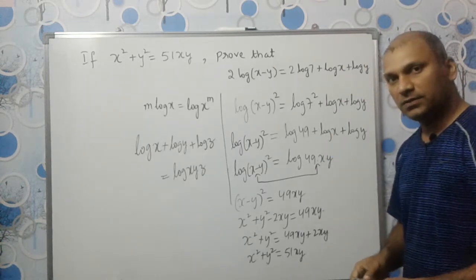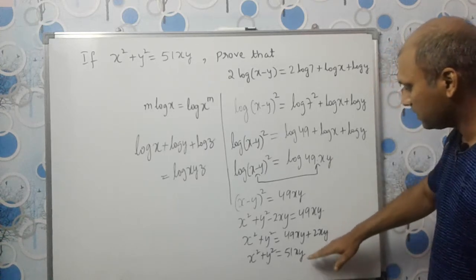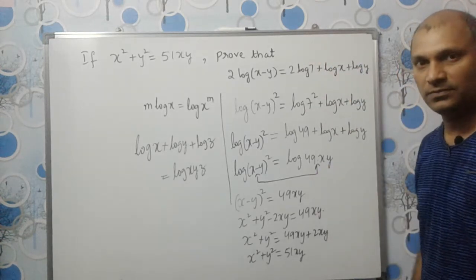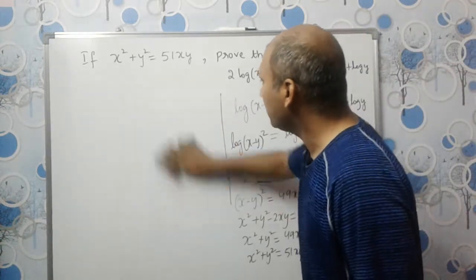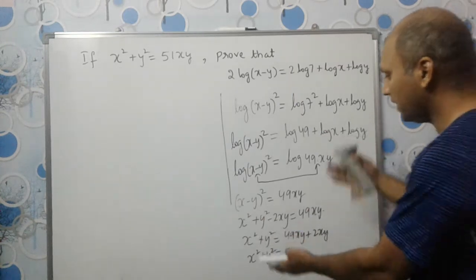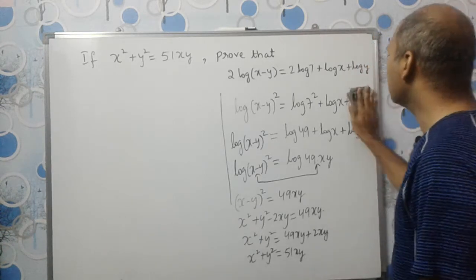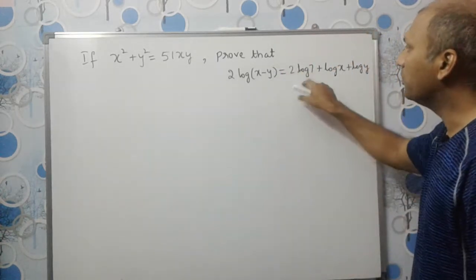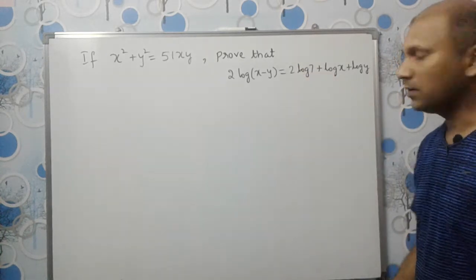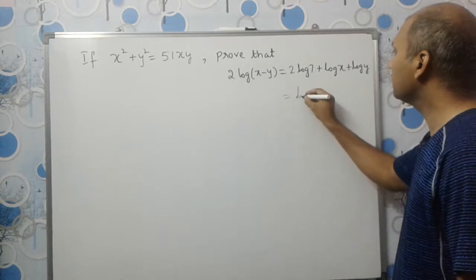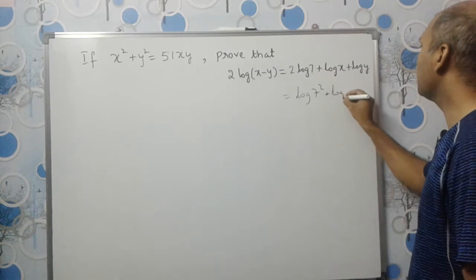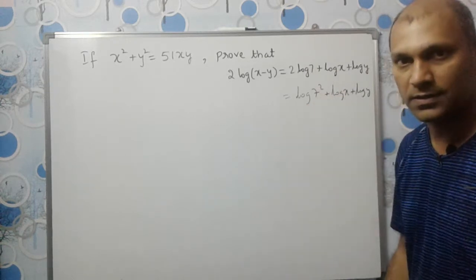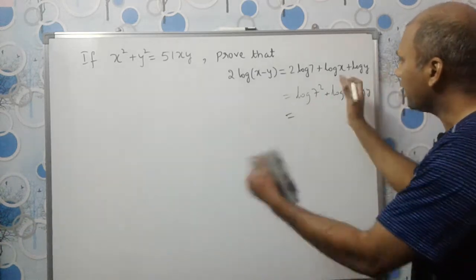Note that this is not the standard procedure — we have to go in reverse. Follow the steps in order: first write the given, then go step by step to reach the result. There is also a second method. In what is to be proved, we check for the constant: we need to make log(7²) + log x + log y, which is log(49xy).